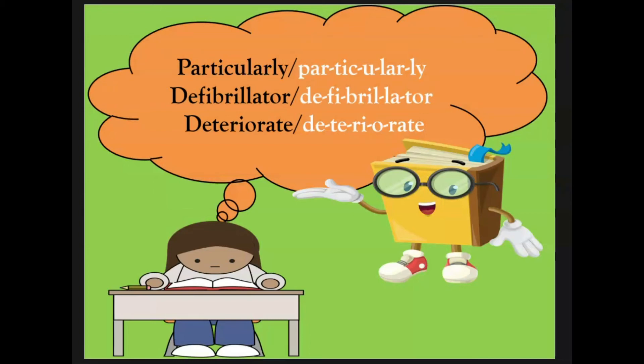Do not forget that each syllable must contain a vowel. Consider the word defibrillator. This word has five syllables. The first syllable or sound part is a combination of the consonant D or the letter D and the long vowel sound E. The second syllable combines the consonant F and the short vowel sound for the letter I. Each syllable in this word has a vowel, whether that vowel is a part of the syllable or stands by itself as a syllable, as you can see in the word deteriorate. The letter O is standing by itself as a syllable.